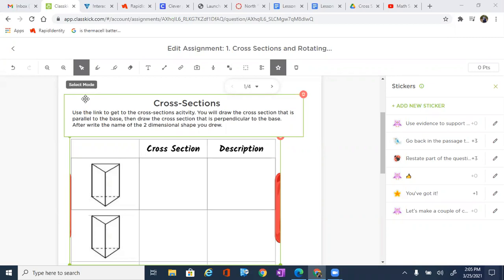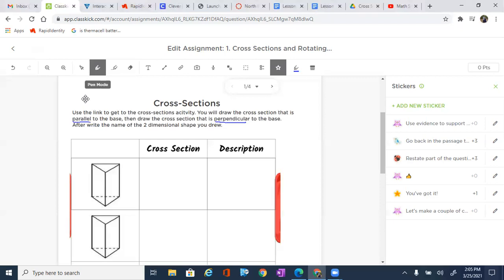You'll draw the cross section that is parallel to the base and then draw the cross section that is perpendicular to the base. So remember, parallel and perpendicular is what we're going to be drawing. And after, you will write the name of the two-dimensional shape that you see.